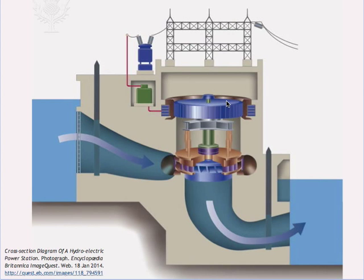A simple power generating principle: a copper coil turns within a giant magnet. As this turbine rotates, an electrical current is generated. The key to generating this power is to find some source that is strong enough to rotate the turbines.